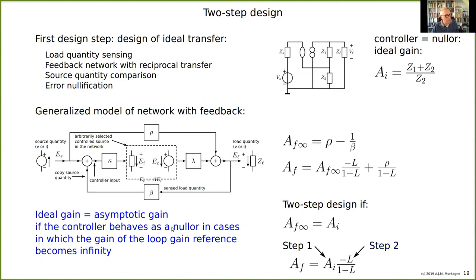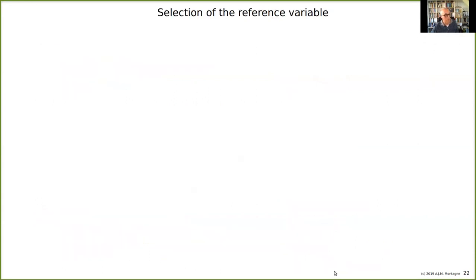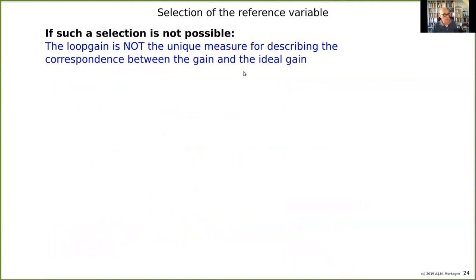The ideal gain equals the asymptotic gain if the controller behaves as a nuller — in cases where the loop gain reference goes to infinity, because that is why the asymptotic gain was defined: by letting the loop gain reference go to infinity. If both conditions are the same — if the controller becomes a nuller when the loop gain reference goes to infinity — then the ideal gain is the asymptotic gain, and the expression can be written in this way. That is the two-step design method.